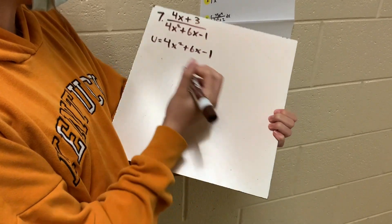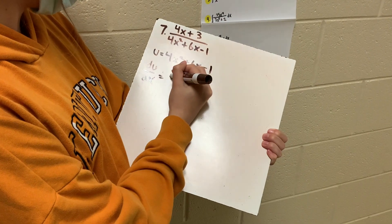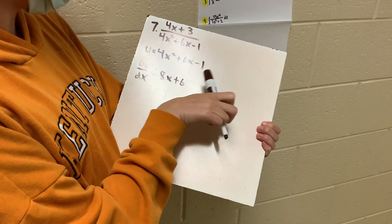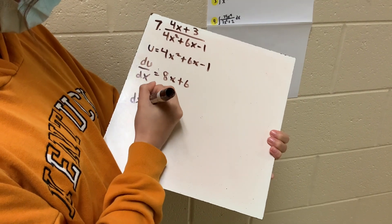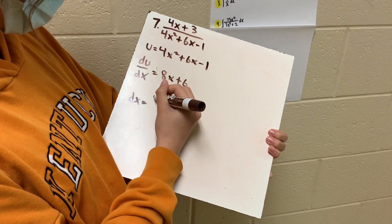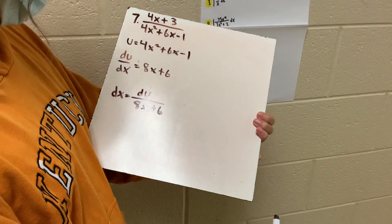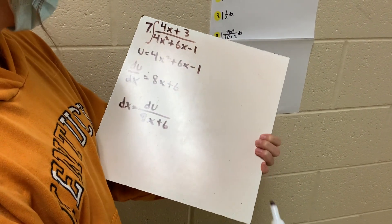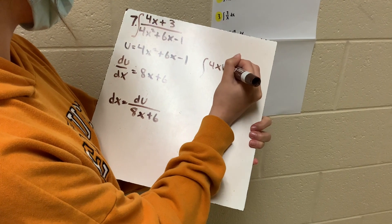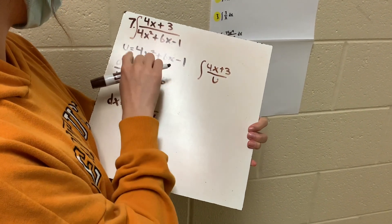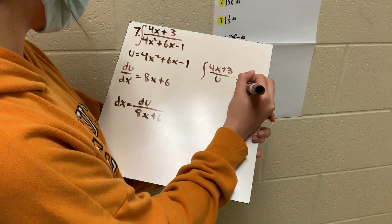And then we'll do the derivative of both sides. So du over dx would be equal to 8x plus 6. And the constant 1 goes away because of the constant rule. Next, we'll be finding dx — so it becomes du over 8x plus 6. Next, we'll be plugging this back into the equation, which would be integral of 4x plus 3 over u, times du over 8x plus 6.